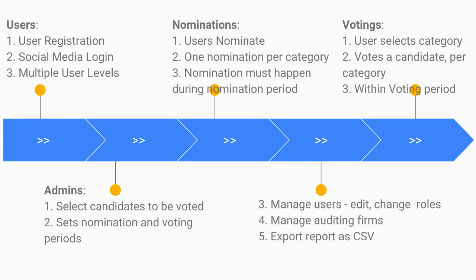This is a voting platform, an e-voting platform, so we don't want people to vote more than once. Some people might want to register with another email and vote again. We don't want registration through email — we just want users to use Facebook. So many people just have one Facebook account, making it harder for people to vote more than once. That's why login and sign-up will be social media only.